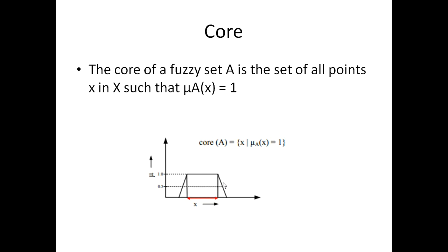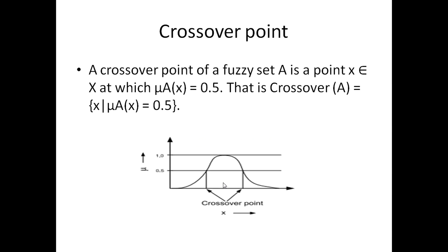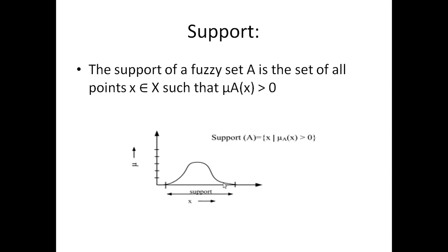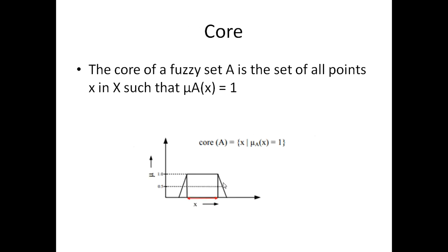The second one is called core. Core is basically the same idea — how we calculate the core of A. Core of A equals X where the membership value of that X equals 1. So where the membership value is 1, as you can see in this diagram, every membership value is having one here. This will be called the core, and where it was greater than zero that was basically the support.